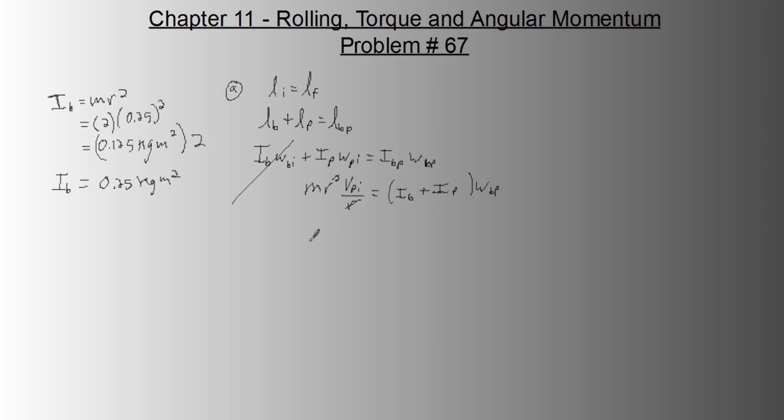The mass of the putty is 0.05 kilograms. R, the distance of the putty, is 25 centimeters. One of those cancels with this R, so we only have one R. And the velocity of the putty initially was 3 meters per second. That's going to equal the I of the balls is 0.25 plus the I of the putty is M r squared. That's this right here, 0.05 times 0.25.